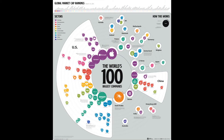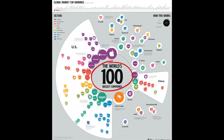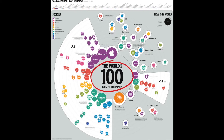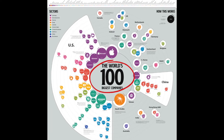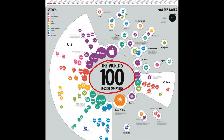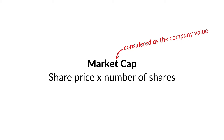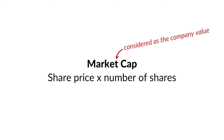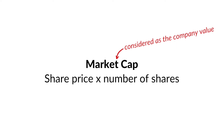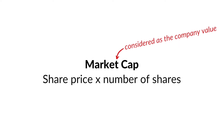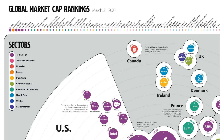Let's check out this diagram together. As the name suggests, this is the top 100 biggest companies in the world by market cap. For those who don't know what market cap is, it's basically the share price multiplied by the number of shares in that company. This diagram is based on information...